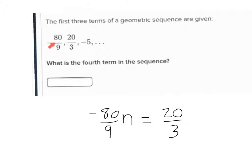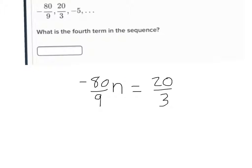Right? So I'm saying negative 80 over 9 times some number n gives me 20 over 3, doesn't it? And then I can just solve for n. So let's solve for n together. Right here, I have negative 80 over 9 times n. So I'm going to divide by negative 80 over 9 on both sides.